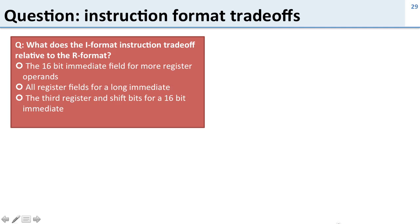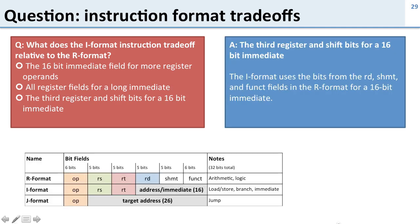Another question: What does the I-format instruction trade off relative to the R-format instruction? It trades off the third register, the shift amount, and the function for a 16-bit immediate.